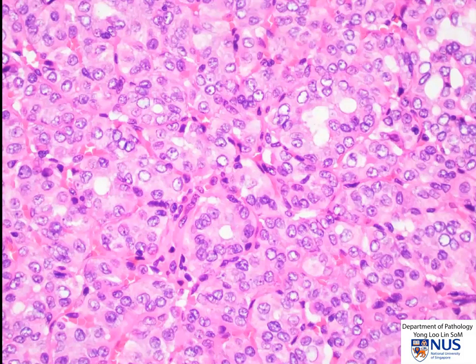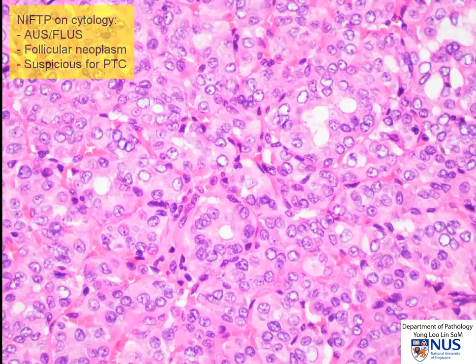The cytologic diagnosis of NIFT-P is very challenging. In fact, it is not possible to diagnose this on cytology because of the necessary criteria of exclusion of capsular or vascular invasion, similar to that in follicular neoplasms. So most of the time, this will fall into Bethesda 3 — the atypical category (AUS) — or Bethesda 4 — follicular neoplasm — or Bethesda 5 — suspicious for PTC categories.